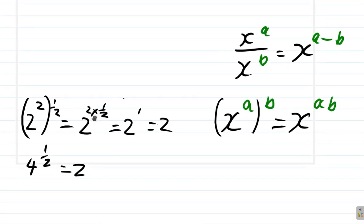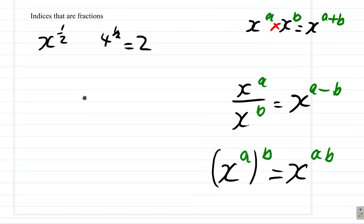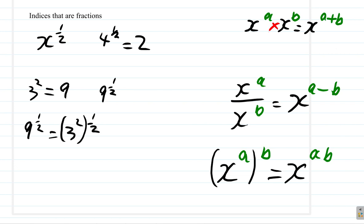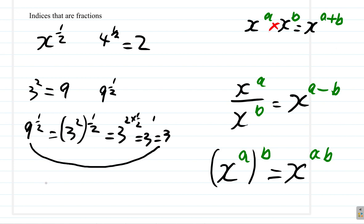Let's try another number. We're going to try a few of them and see if we can see some pattern. Suppose we have 3 squared — we get 9. Suppose we try 9 to the half. 9 to the half means 3 squared to the half, because 3 squared is 9. Based on the third law of indices, this is 3 to the 2 times half. 2 times half is 1, so it's 3 to the 1, which is 3. So 9 to the power of 1 half is equal to 3.